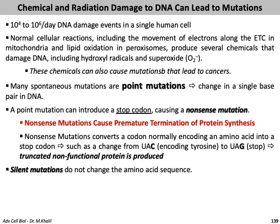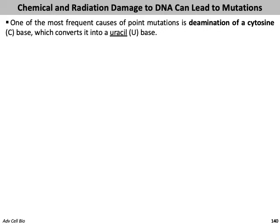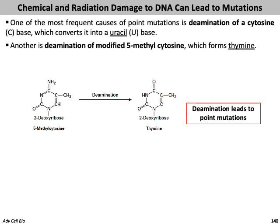Silent mutations don't change the amino acid sequence. Point mutations can also occur in non-protein-coding DNA sequences that regulate gene transcription, such as promoter or enhancer regions. One of the most frequent causes of point mutations is deamination of cytosine, which converts it into uracil. Deamination of modified 5-methylcytosine forms thymine. If these alterations are not corrected before replication, this creates a permanent change in the DNA sequence.